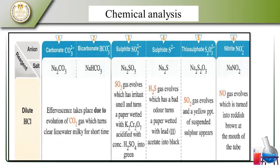To summarize chemical analysis: carbonate and bicarbonate both produce effervescence because of the evolution of carbon dioxide gas, which turns lime water milky for a short time. The sulfate group: SO₂ gas evolves with a pungent smell, and turns paper wetted with acidified K₂Cr₂O₇ into green. The thiosulfate: H₂S gas evolves with a bad odor, then sulfur appears, and H₂S gas evolves at the mouth of the test tube.